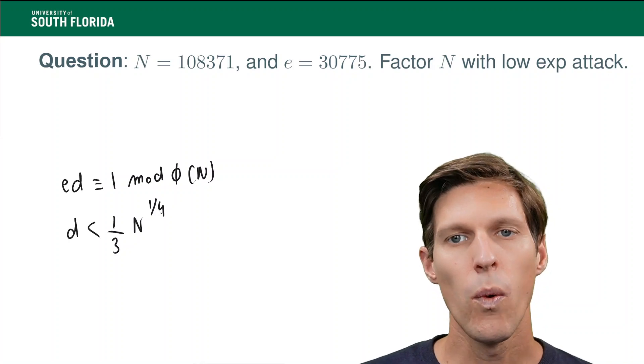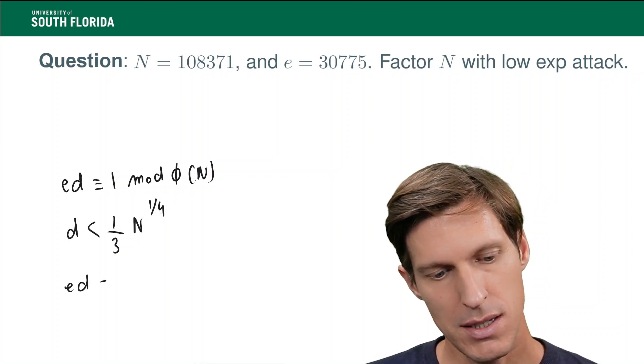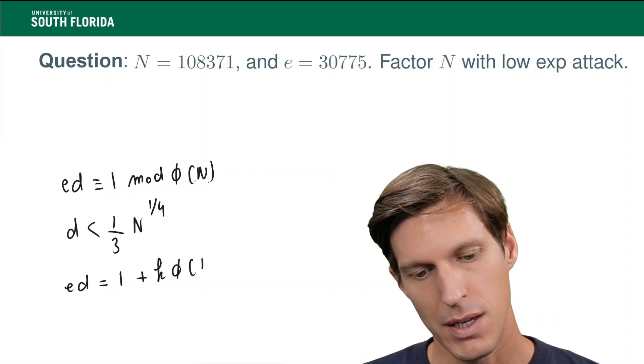Now, what happens in this case? Well, first, let k such that ed equals 1 plus k times phi of n.